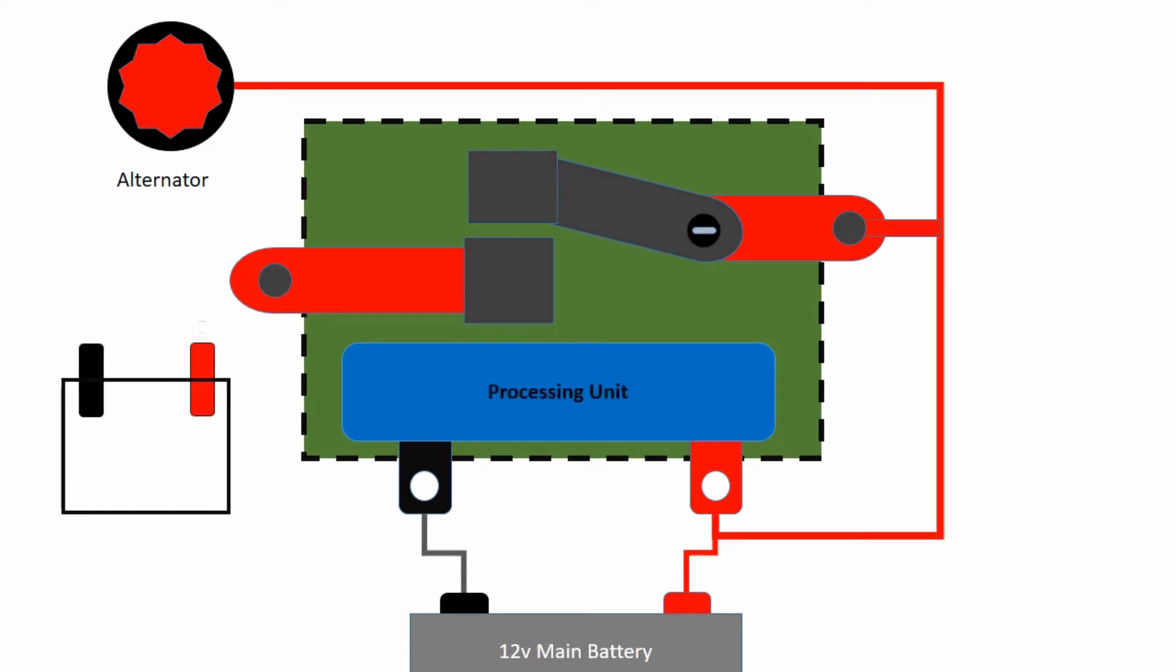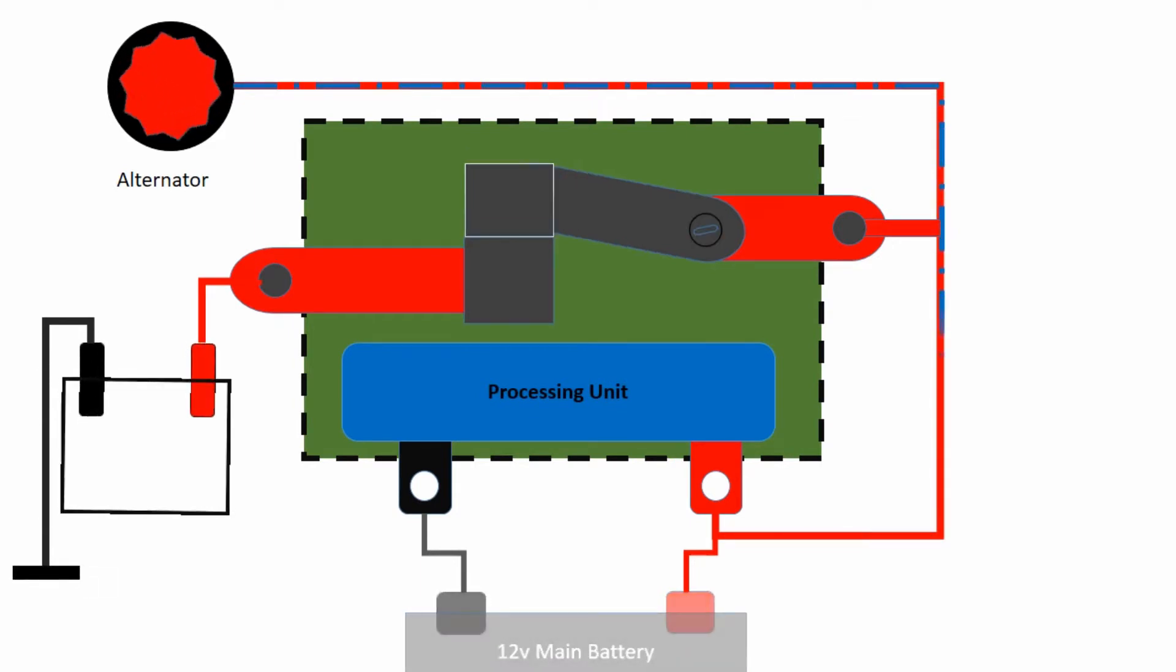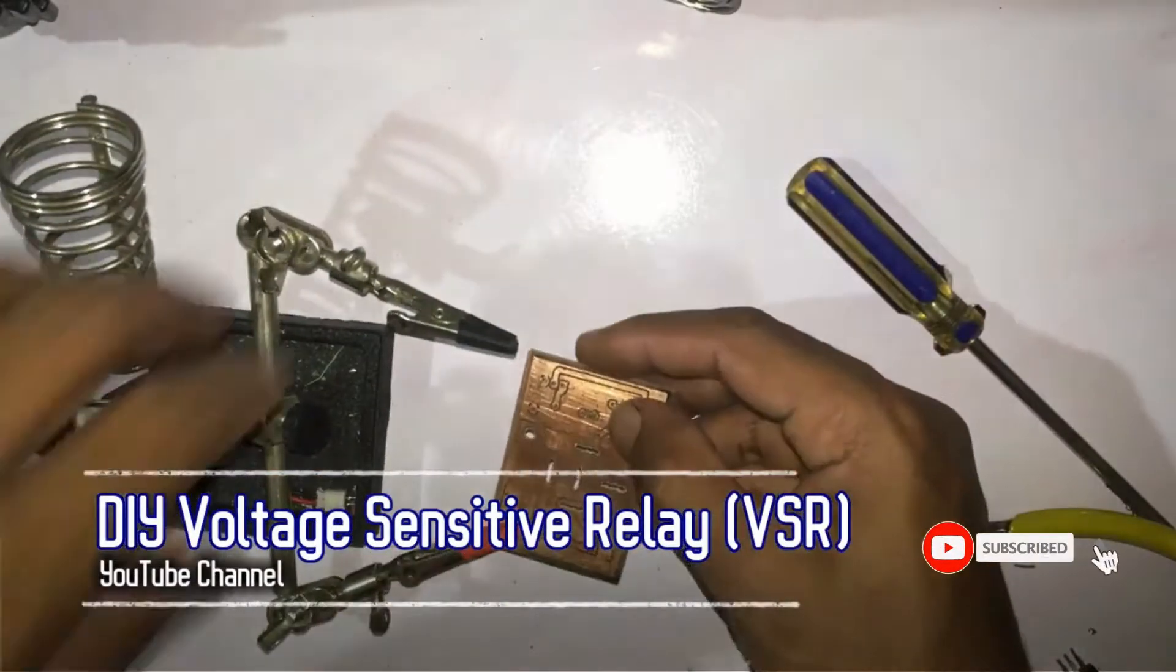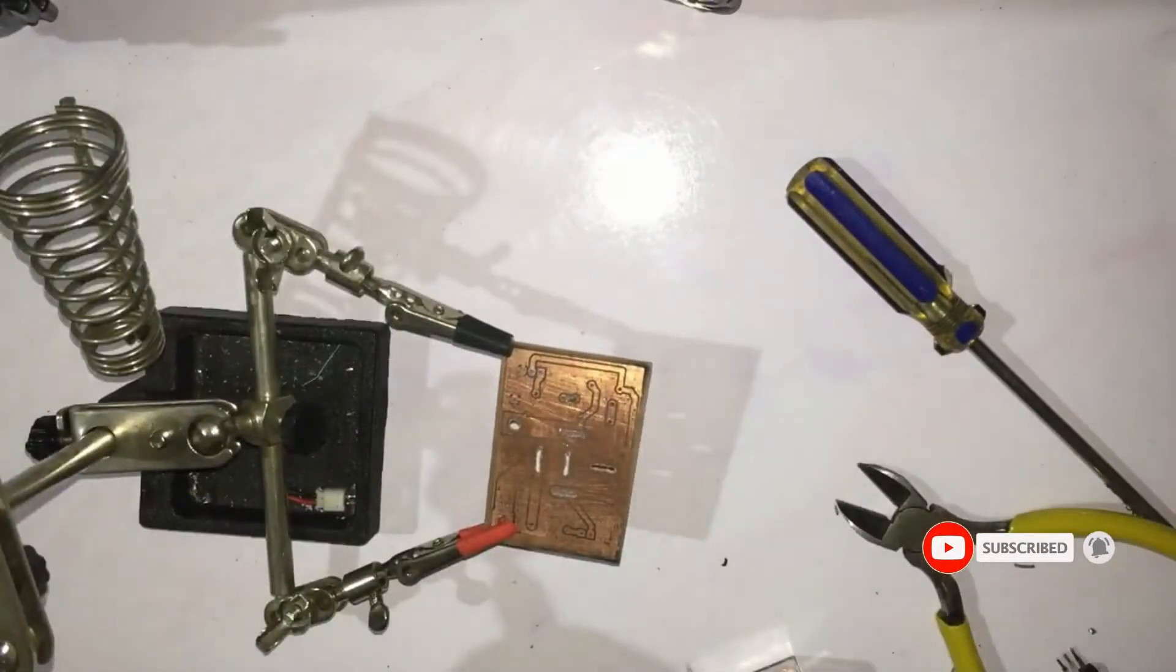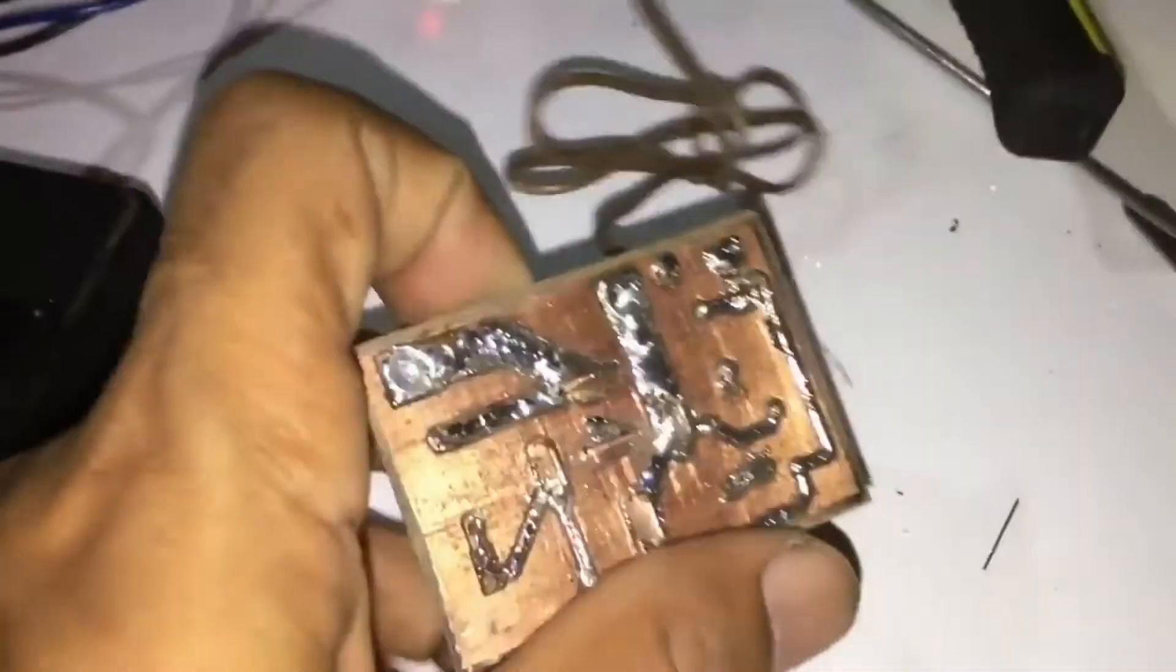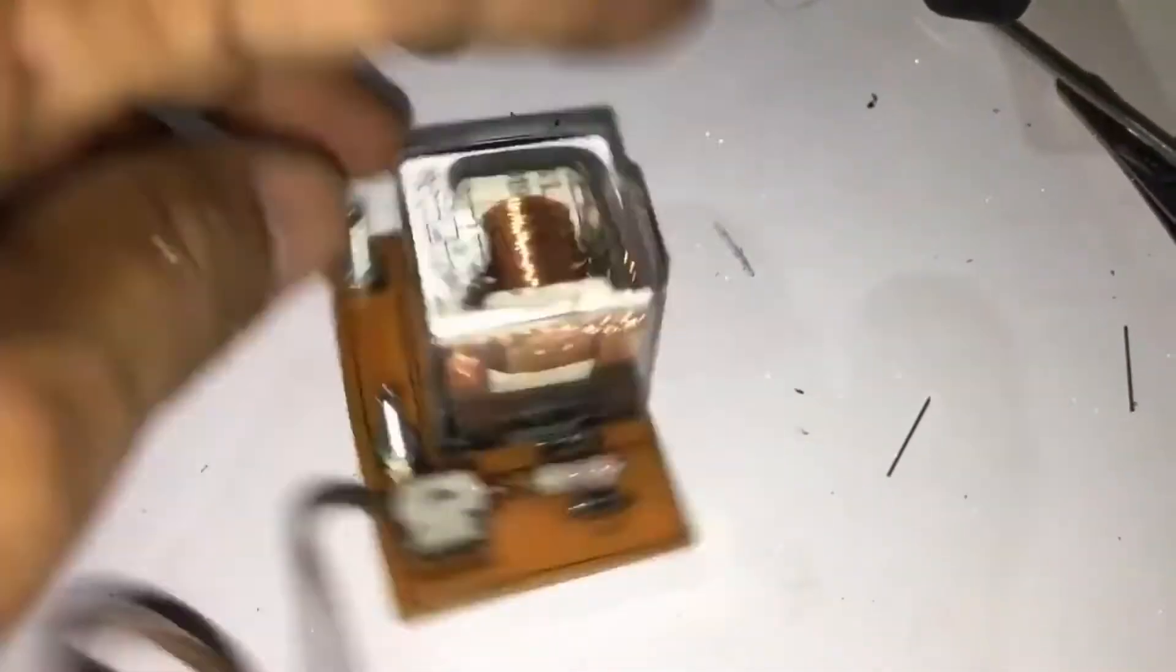When the engine is off, VSR unit turns off disconnecting the link between second battery and alternator. Therefore both batteries are not being charged from each other. This is the first part of car dual battery installation lesson. You can find the circuit diagram and PCB layout from the description below.